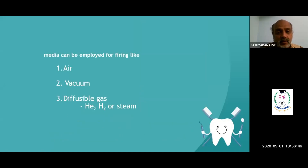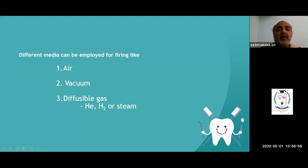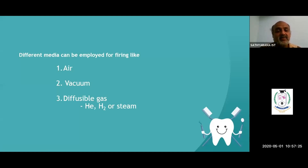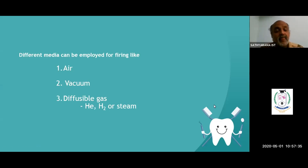There are different ways of firing: air firing, vacuum firing, and diffusible gas firing using helium, hydrogen, or steam. Previously, air firing was used, but now vacuum firing is preferred because oxygen and other air components can have a disadvantage by getting into the molecules. Vacuum firing sucks out all air from the machine, resulting in a very tight bonding structure.